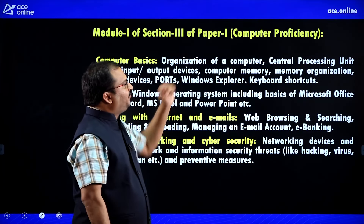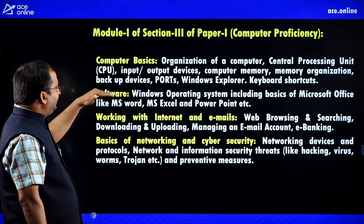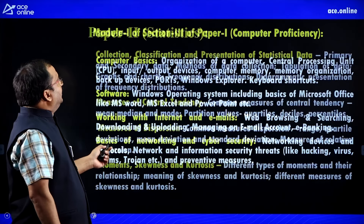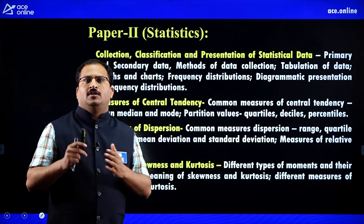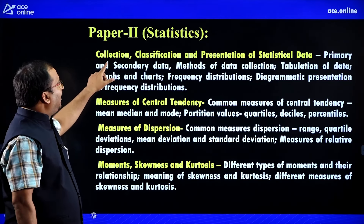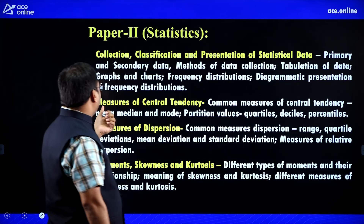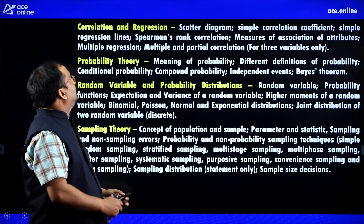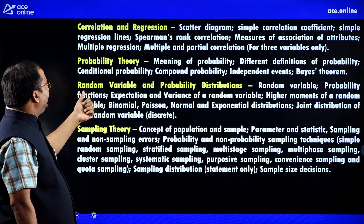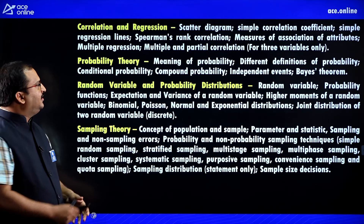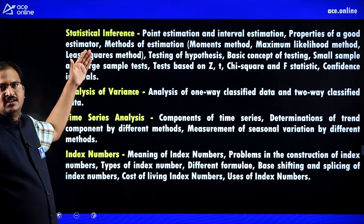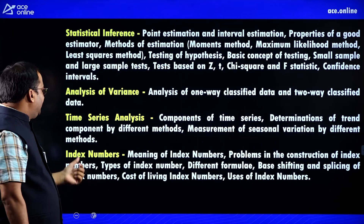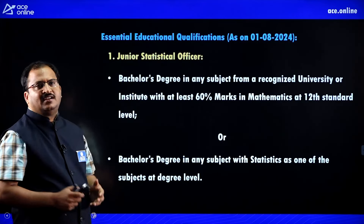Computer Proficiency module covers computer basics, software, working with internet and emails, basics of networking and cyber security. Paper 2 covers Statistics: collection, classification and presentation of statistical data, measures of central tendency, measures of dispersion, moment skewness and kurtosis, correlation and regression, probability theory, random variable and probability distribution, sampling theory, statistical inference, analysis of variance, time series analysis, and index numbers. These are degree-level topics, so prepare accordingly.